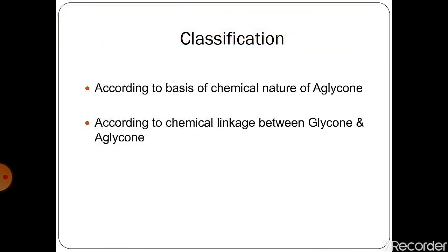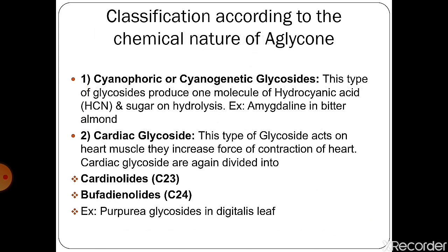Now, how are glycosides classified? They are classified on the basis of the chemical nature of the glycone part and the aglycone part. They are divided into different classes based on the chemical linkage between the glycone and aglycone part. First, we will discuss the classification according to the chemical nature of the aglycone part, that is the non-sugar part.